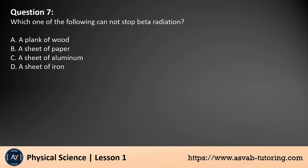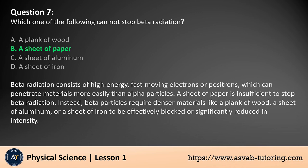Question 7: Which one of the following cannot stop beta radiation? A. A plank of wood, B. A sheet of paper, C. A sheet of aluminum, D. A sheet of iron. The answer is B. Beta radiation consists of high energy, fast-moving electrons or positrons, which can penetrate materials more easily than alpha particles. A sheet of paper is insufficient to stop beta radiation. Instead, beta particles require denser materials like a plank of wood, a sheet of aluminum, or a sheet of iron to be effectively blocked or significantly reduced in intensity.